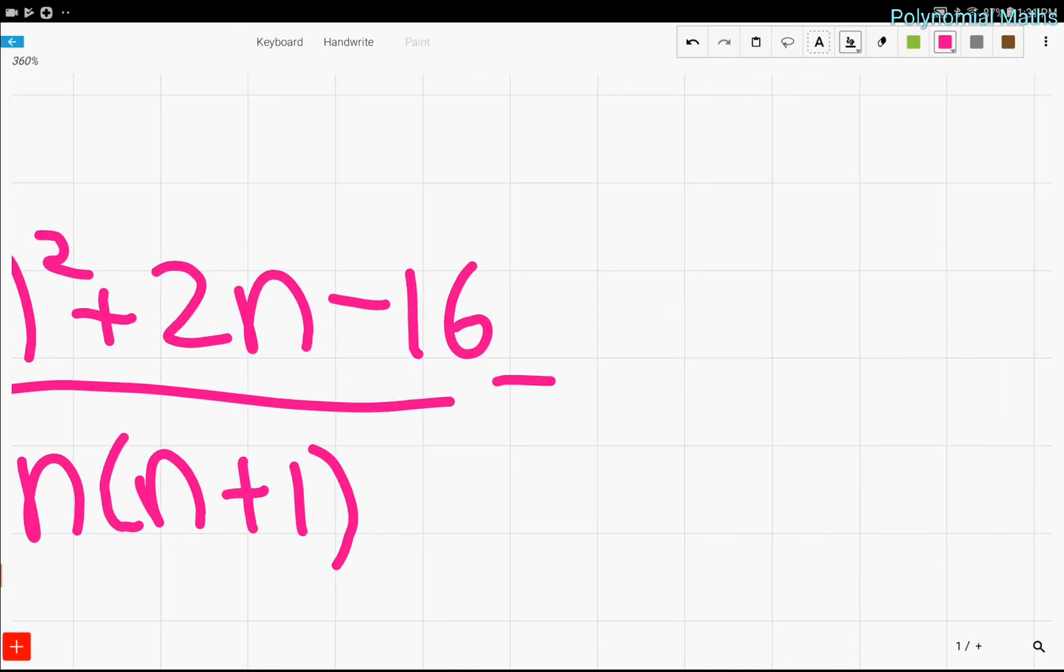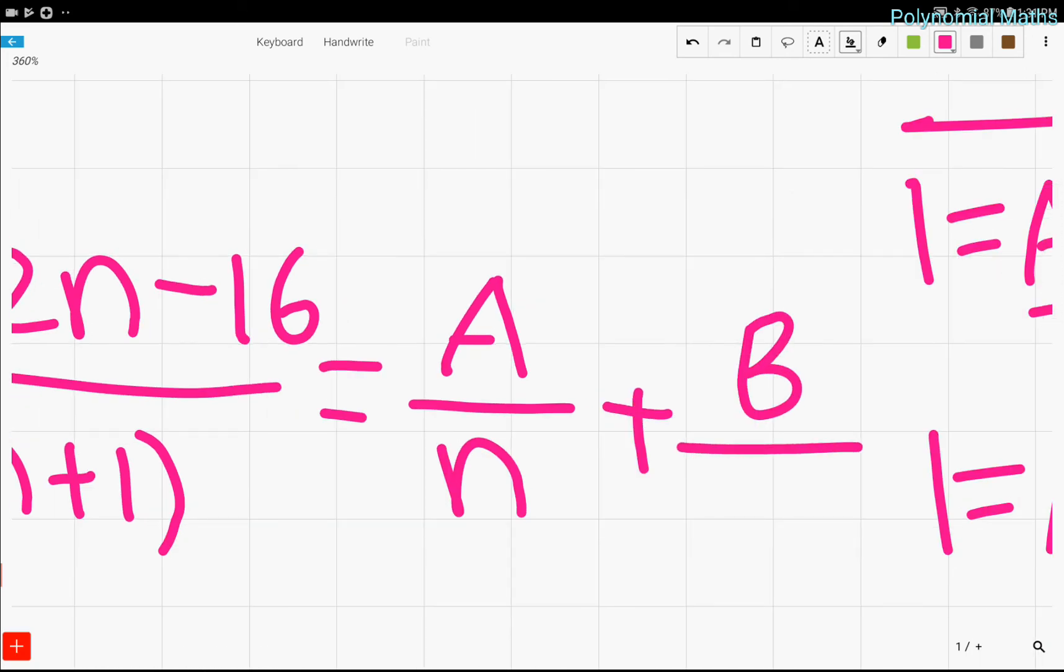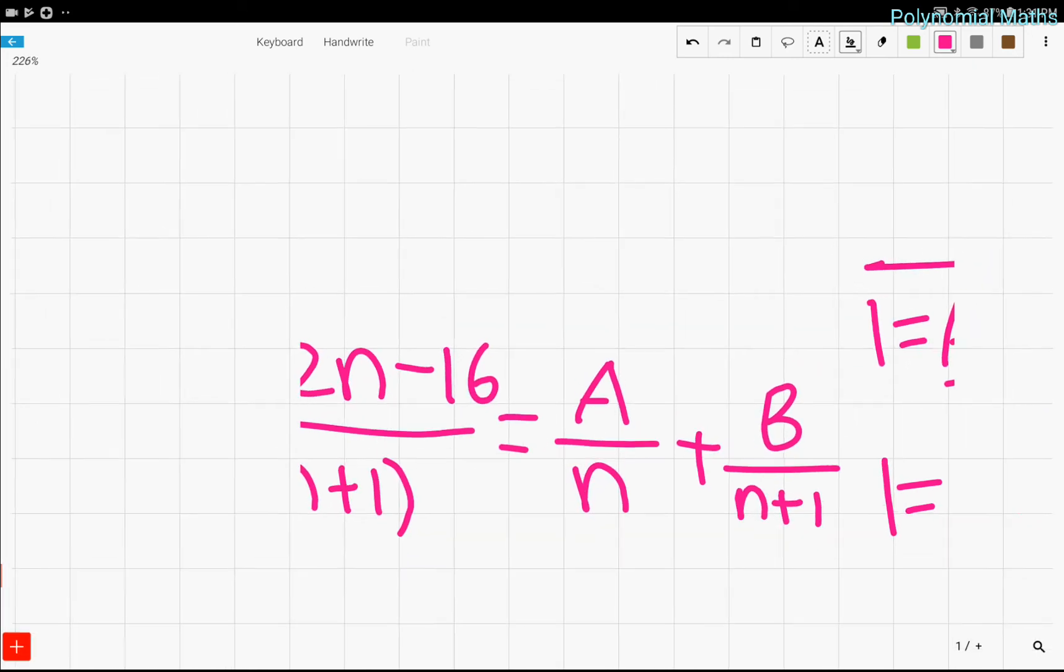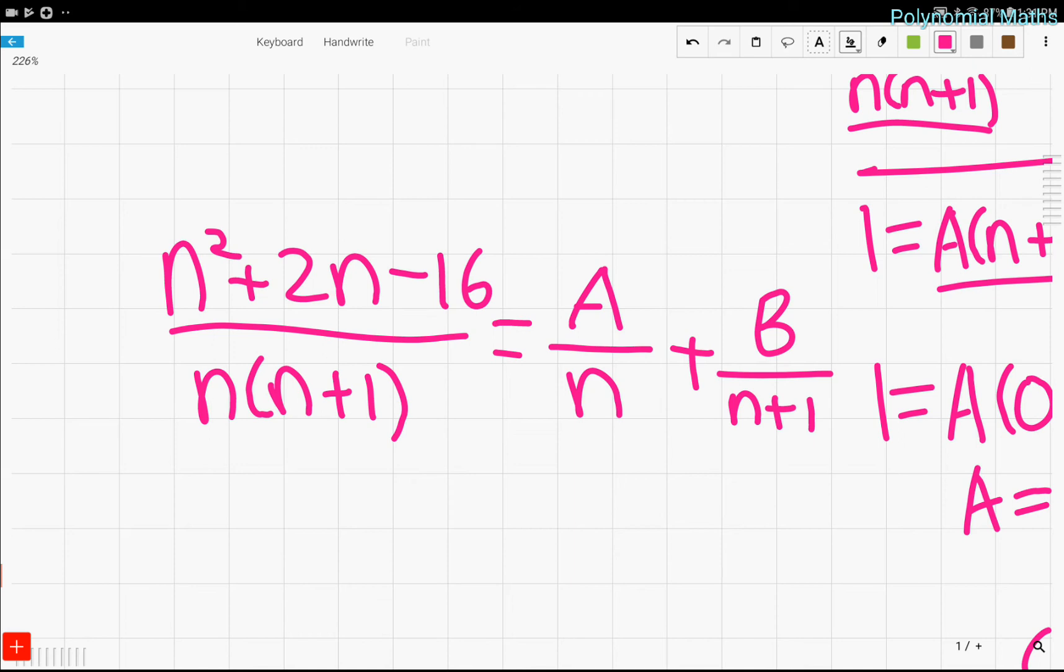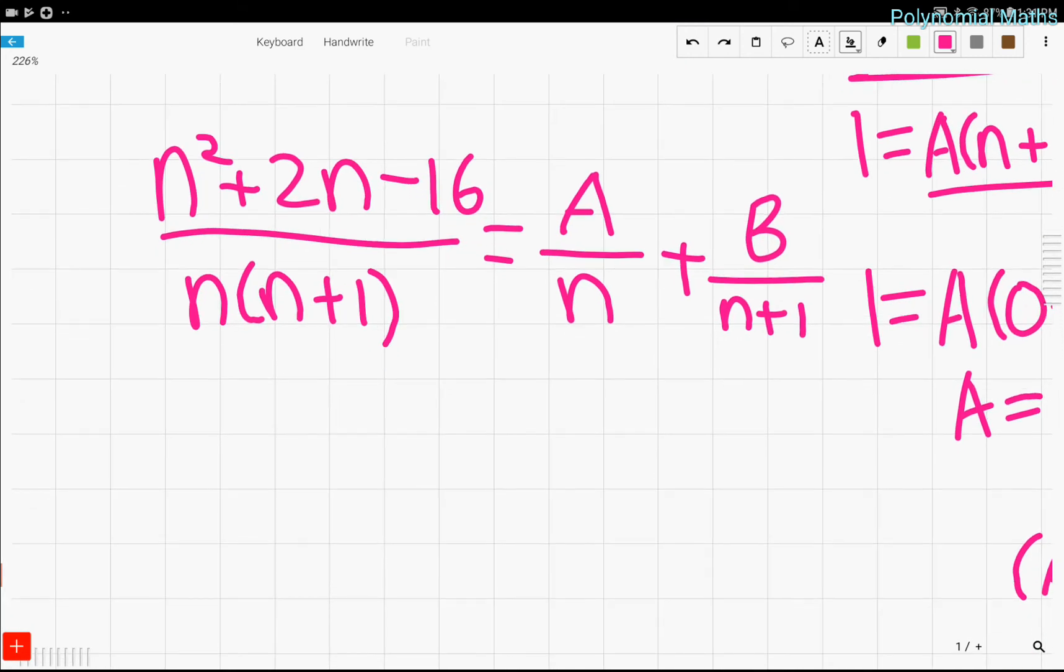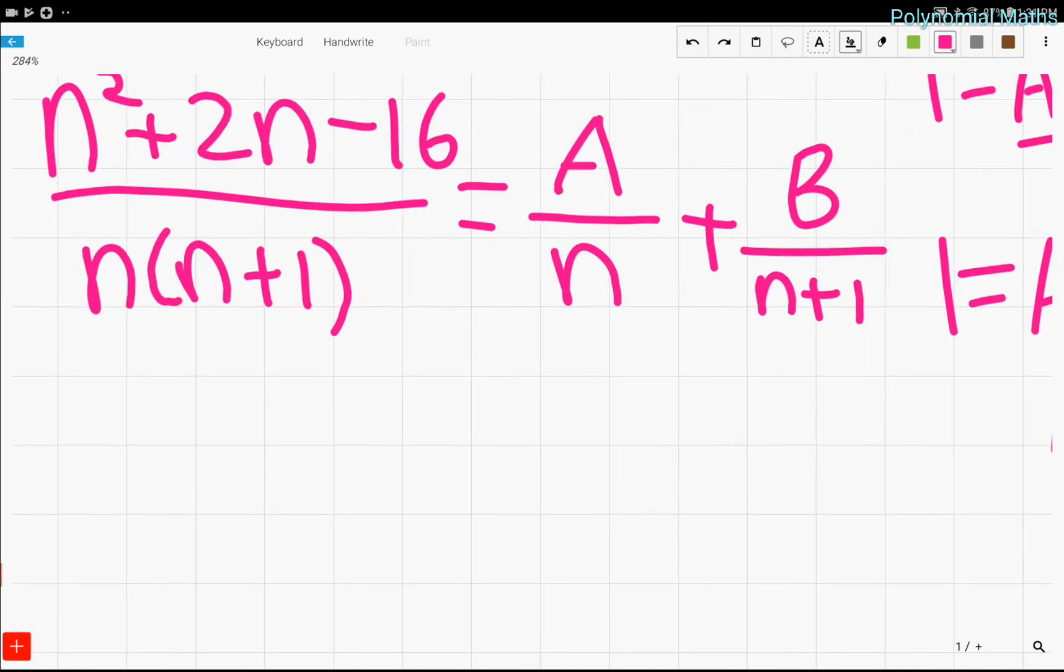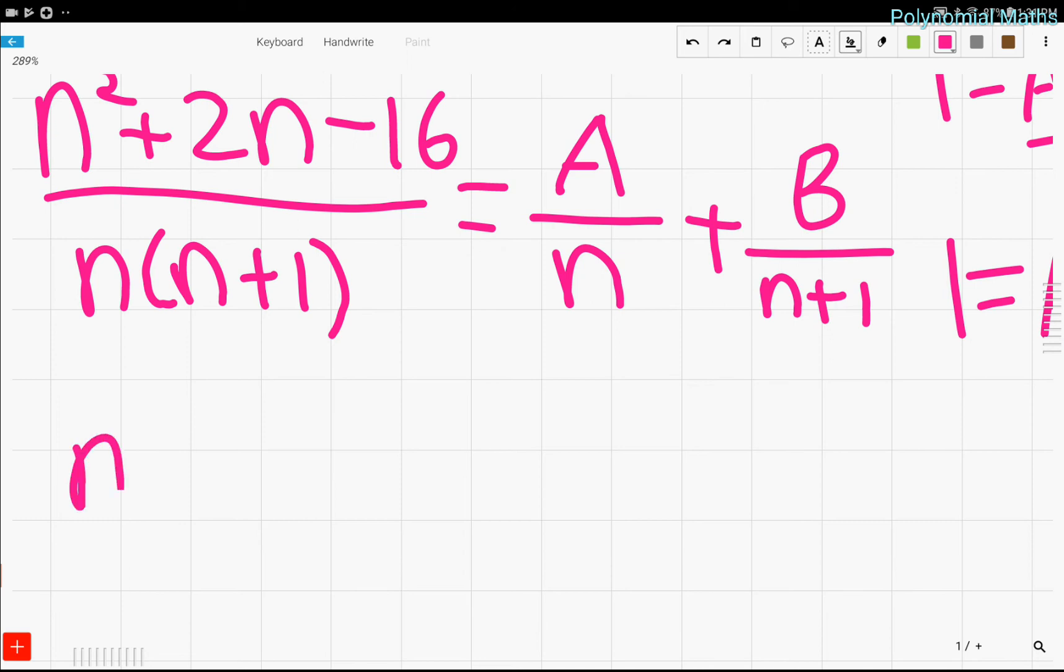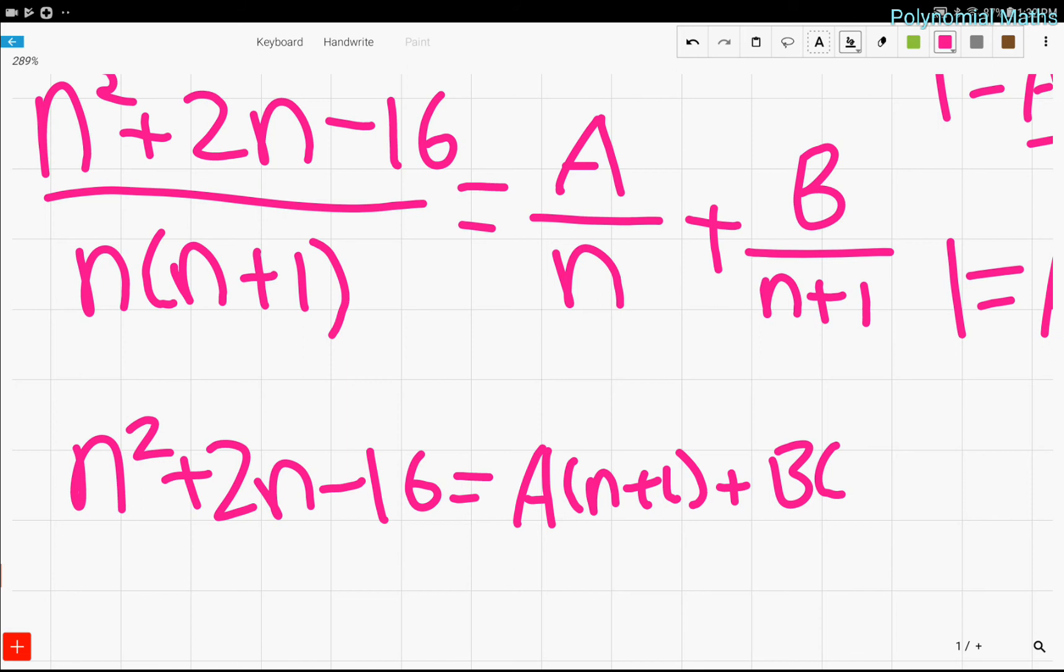Well, let's just write this as, again, as a over n plus b over (n plus 1) and see what happens. So, the problem is here is that we see that actually, there isn't a problem. Sorry. So, we multiply both sides by n times (n plus 1) and we can then solve for a and b, respectively. So, when we do that, we're left with n squared plus 2n minus 16 equals a times (n plus 1) plus b times n.